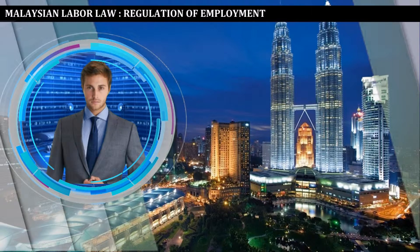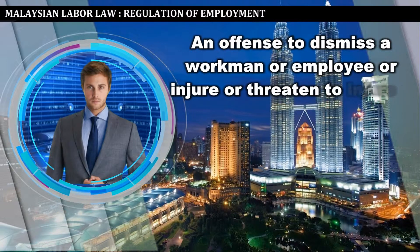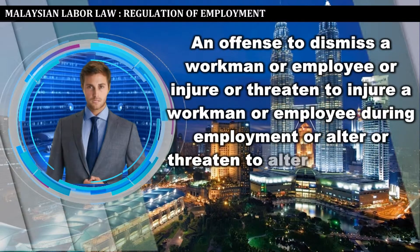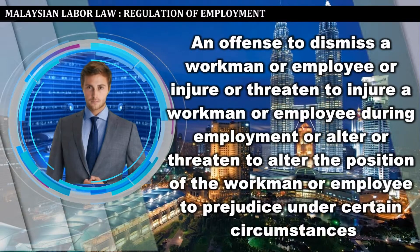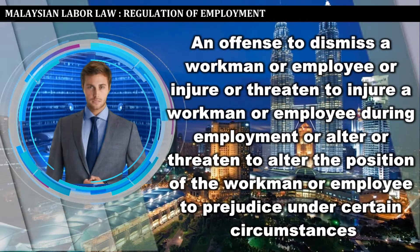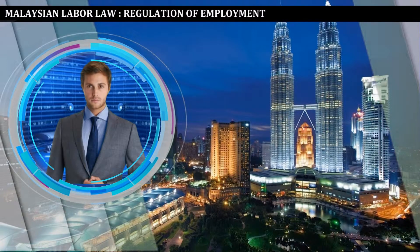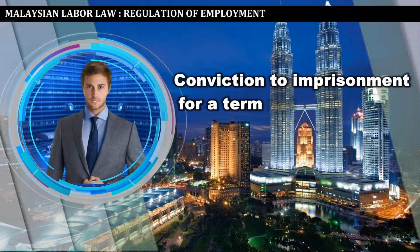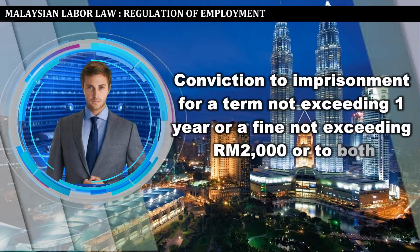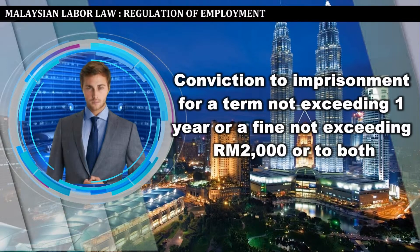Part 10, Section 59 of the Industrial Act 1967 makes it an offense to dismiss a workman or employee, or injure or threaten to injure a workman or employee during employment, or alter or threaten to alter the position of the workman or employee to prejudice under certain circumstances. An employer contravening the above section is liable on conviction to imprisonment for a term not exceeding one year, or a fine not exceeding 2,000 ringgit, or both.